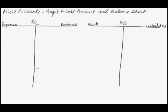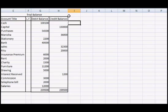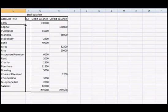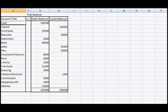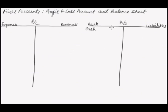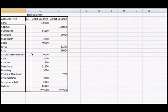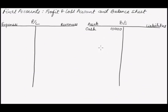Let's come to our question. Our first account is cash account, and we have a debit balance for cash. Cash is an asset, so we'll write cash on the asset side and write the amount. The next account is capital account — this is a liability having a credit balance, so we mention capital on the liability side. The amount is $150,000.